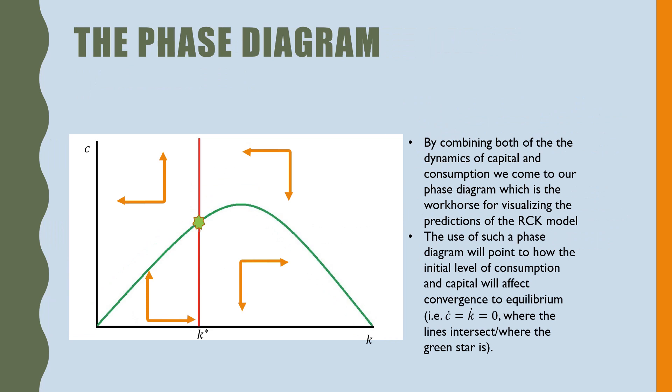By combining both the dynamics of capital and consumption, we come to our phase diagram, which is the workhorse for visualizing the predictions of the RCK model. The use of such a phase diagram will point to how initial levels of consumption and capital will affect convergence to equilibrium, i.e. where c dot is equal to k dot, which is equal to zero, which is where both these lines intersect or where the green star is.